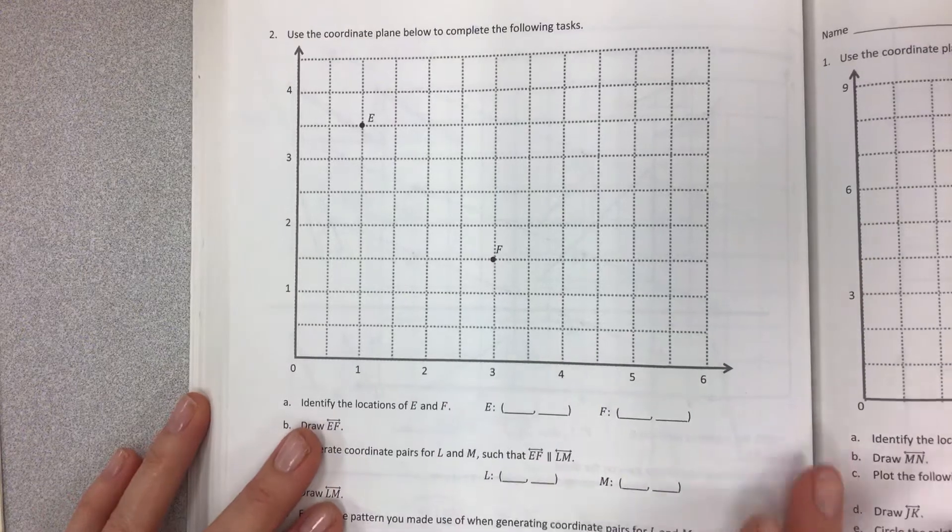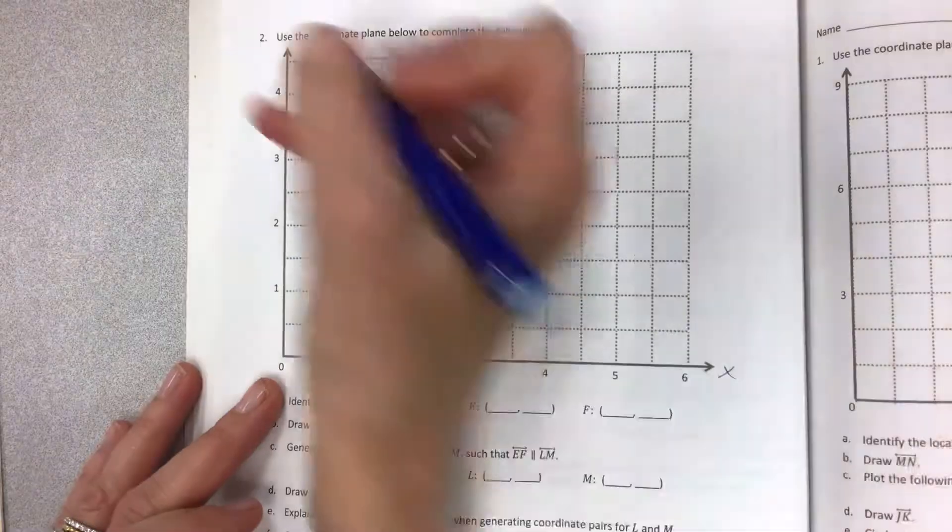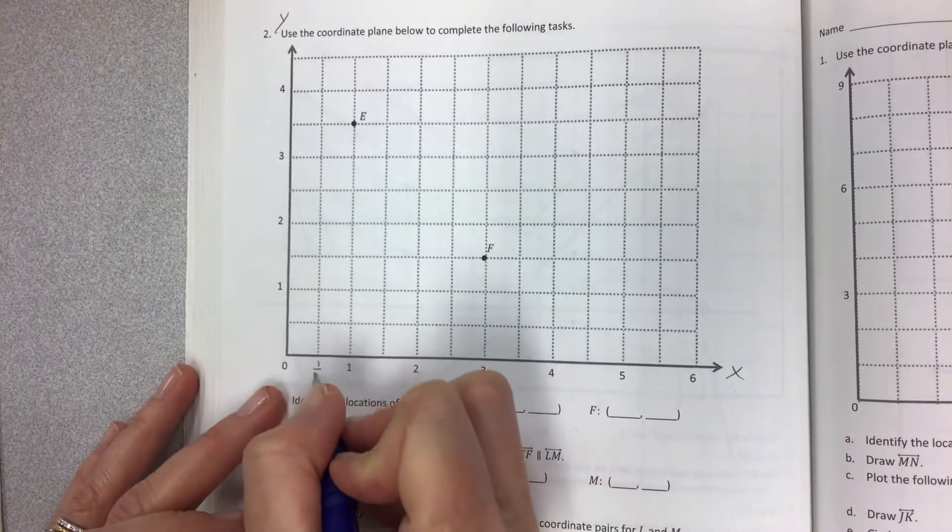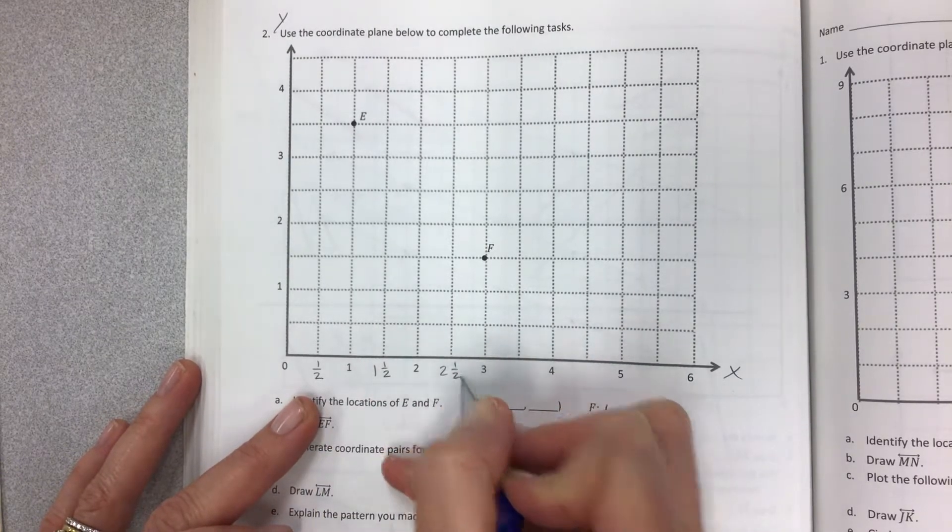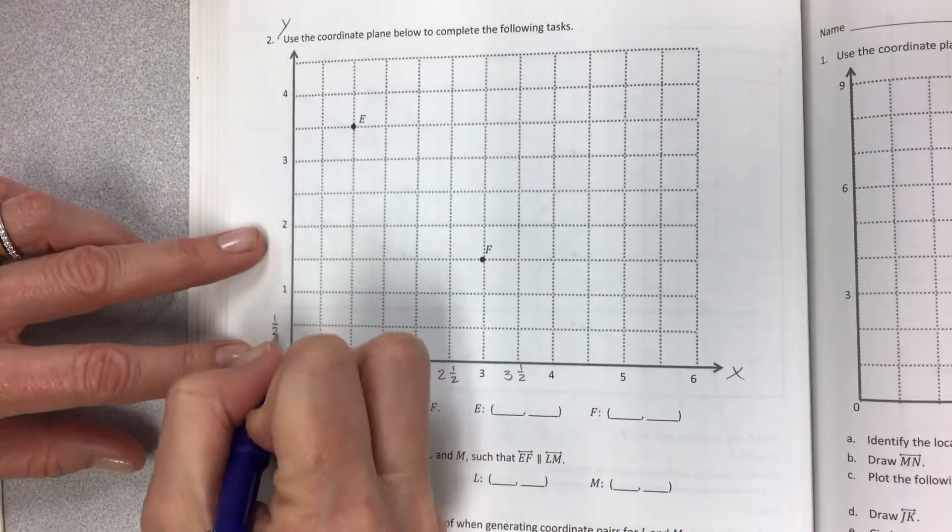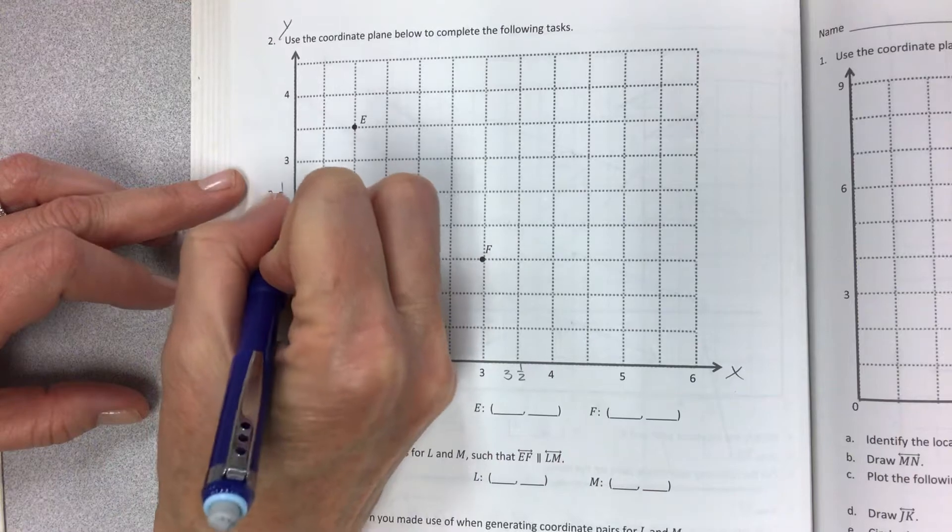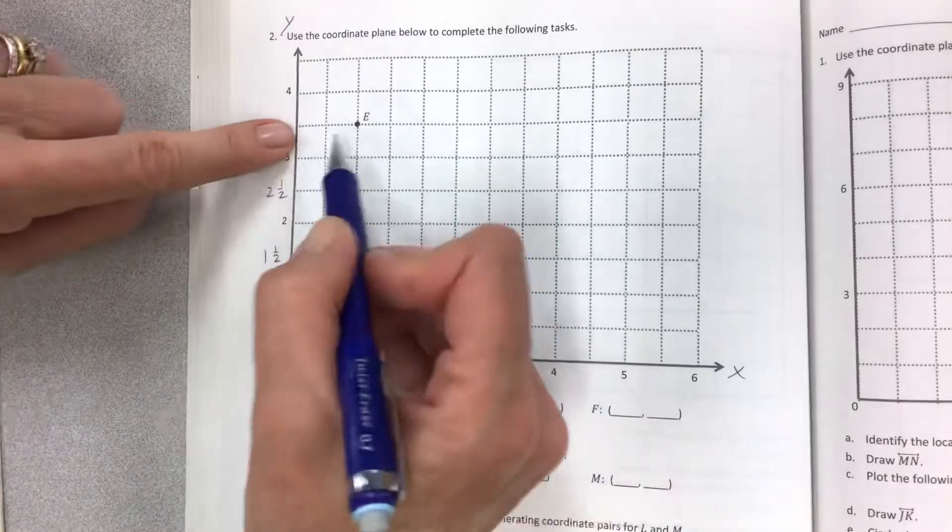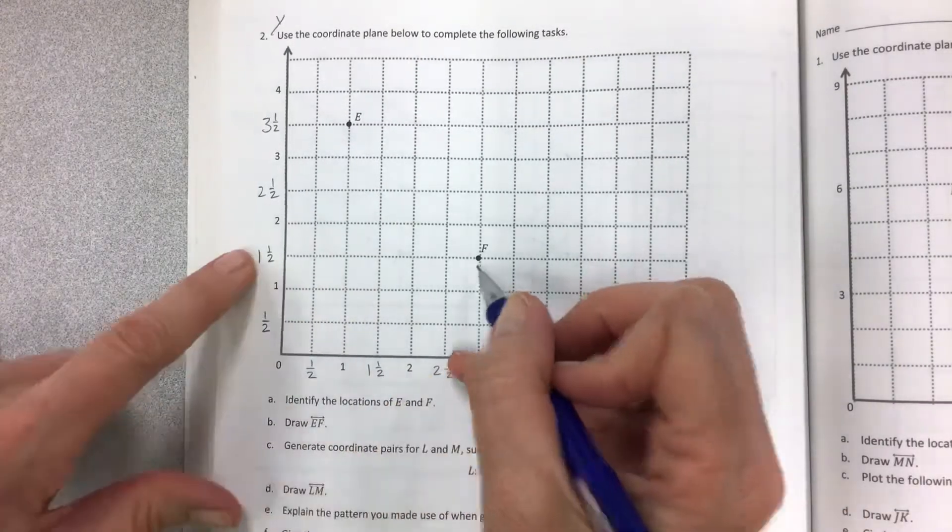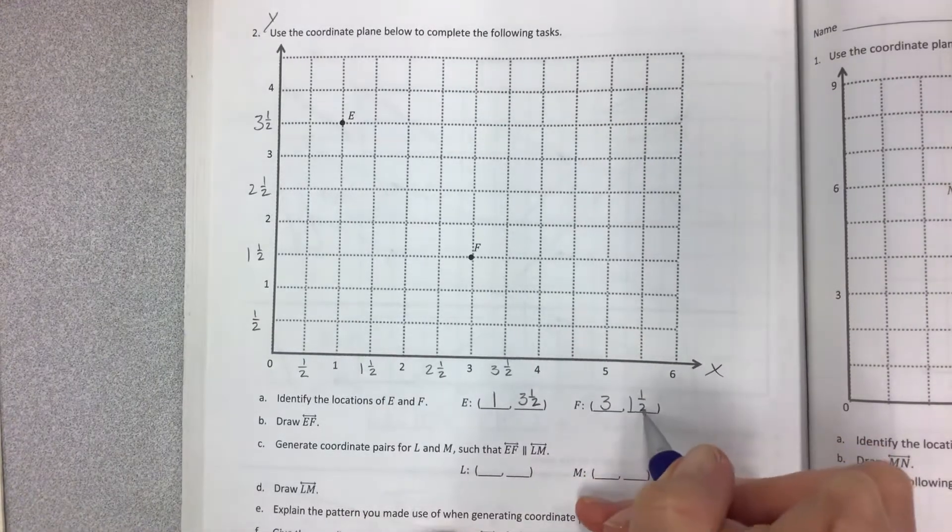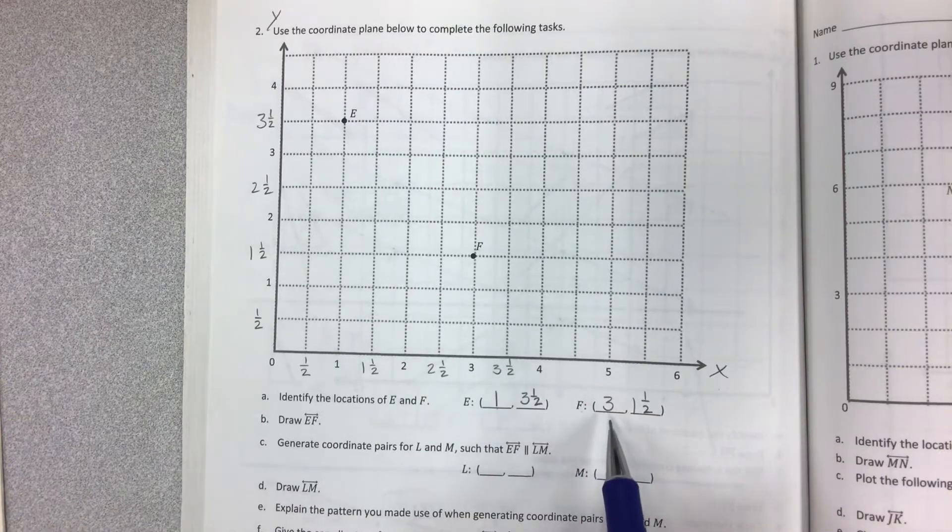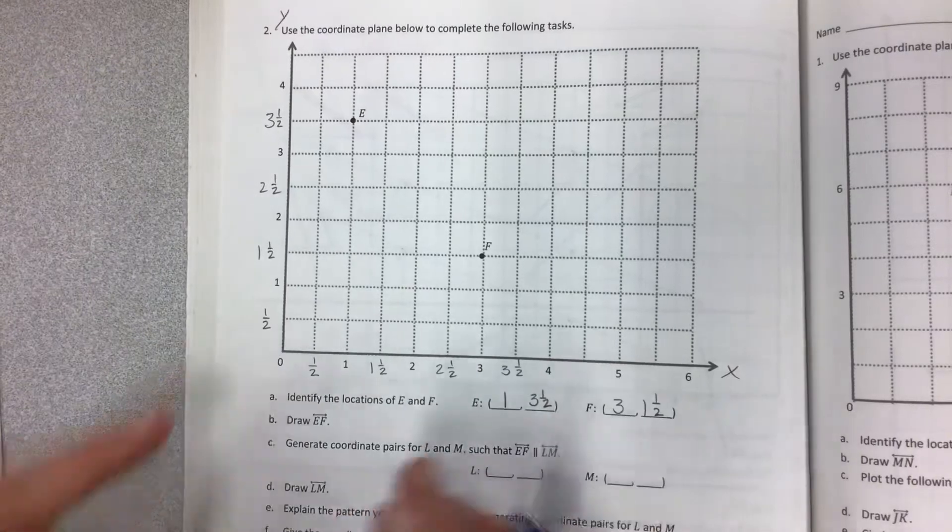Identify the locations of point E and point F. So point E—first of all what are we counting by? Here's my x-axis and my y-axis but every other one is marked with a whole number. That means we're counting by halves. If you want to count with fractions put a couple in just to remind yourself what you're counting by. You can use decimals if you prefer to put 0.5, 1.5, 2.5. You can do that too but since I started with fractions I'll just continue with fractions just for a few. Now for point E we have 1 and then remember 3 and a half. 1, 3 and a half. And for F we have 3, 1 and a half. Usually when I'm checking things in the classroom this is when I walk around and I can see if you understand how to get the x-y coordinates because for E I'm going to look for 1 first and for F I'm going to look for 3 first. And so it usually jumps right out if you don't use the x-coordinate first.